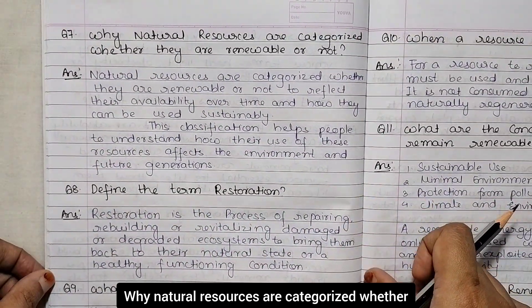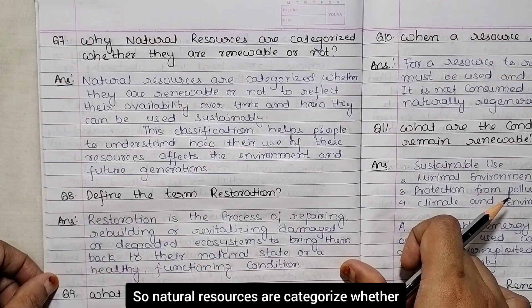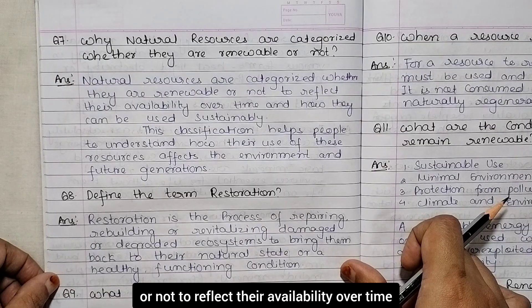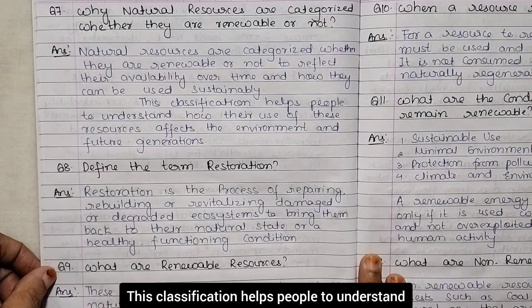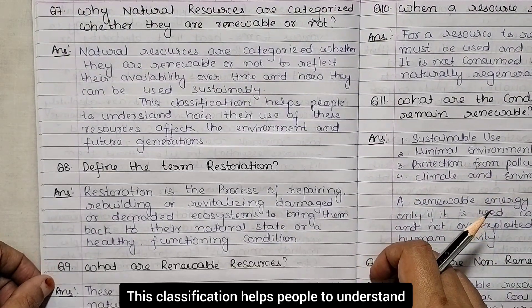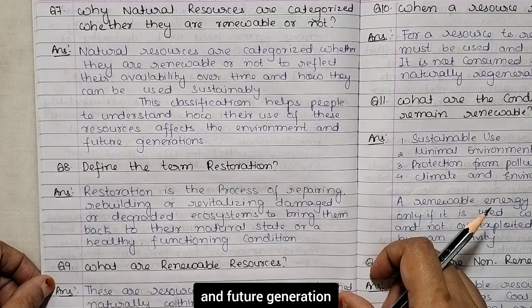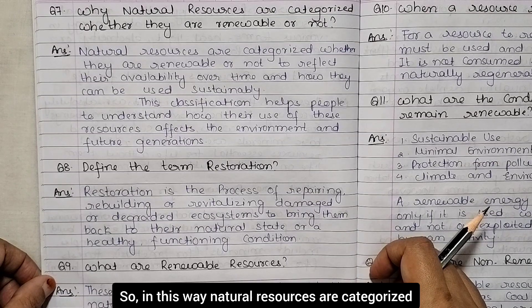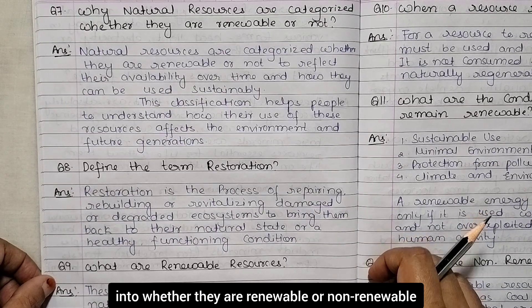Question number seven: why are natural resources categorized as renewable or non-renewable? Natural resources are categorized this way to reflect their availability over time and how they can be used sustainably. This classification helps people understand how their use of these resources affects the environment and future generations.